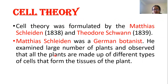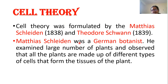So, cell theory. Whatever things were discovered about a cell were formulated into a theory called cell theory. It was formulated by Matthias Schleiden in 1838 and Theodor Schwann in 1839. Matthias Schleiden was a German botanist who examined a large number of plants and observed that all plants are made up of different types of cells that form the tissue of the plant.